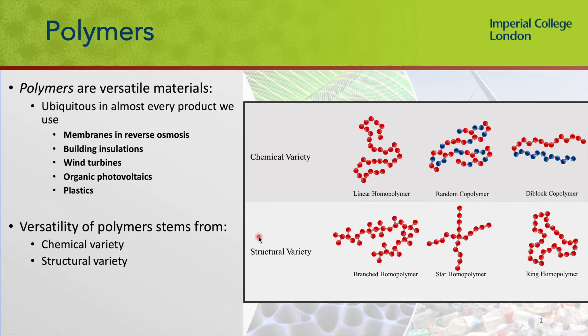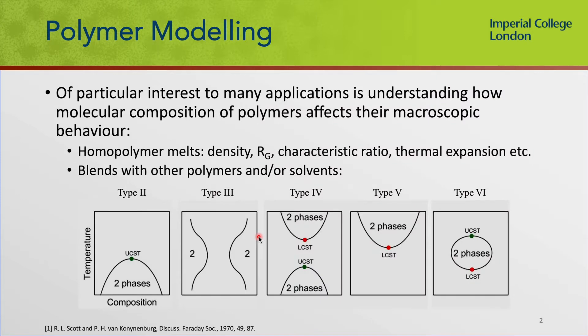For example, if you have a linear polymer or a branched, cross-linked, or a star polymer. Of particular interest to many applications of polymers is understanding how this variety — this chemical composition or the structural composition — affects the macroscopic behavior.